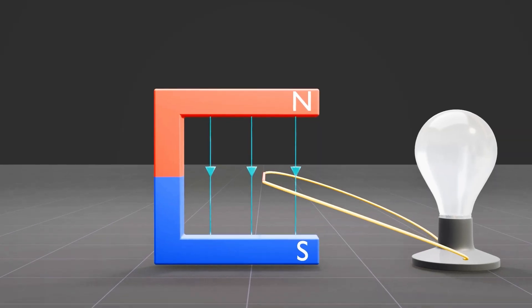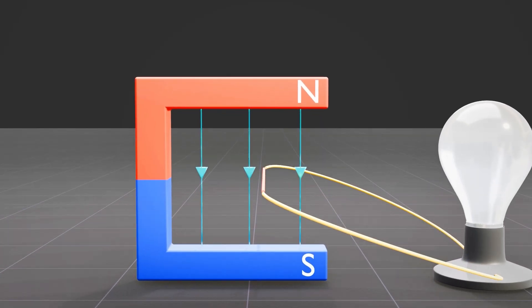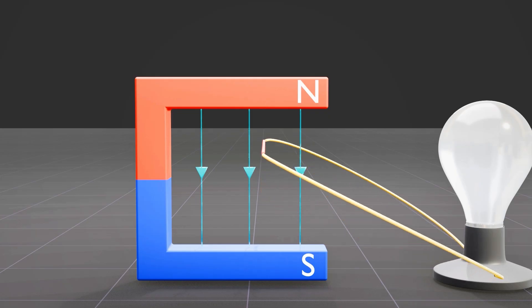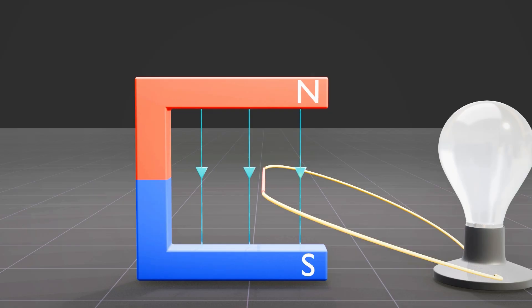Consider a situation where the magnetic field remains constant, but a wire is in motion relative to a permanent magnet. When the wire moves vertically, parallel to the magnetic field lines, no current will be generated because the magnetic field does not change relative to the wire.